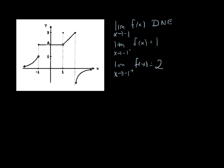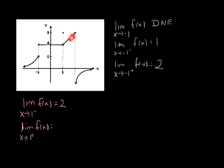If we move our focus over to what's happening as x approaches 1, we can say that the limit as x approaches 1 from the left is equal to 2. The limit as x approaches 1 from the right will also be equal to 2; our function values are getting closer and closer to 2. Since the limit from the left is equal to the limit from the right, the limit as x approaches 1 is also equal to 2.